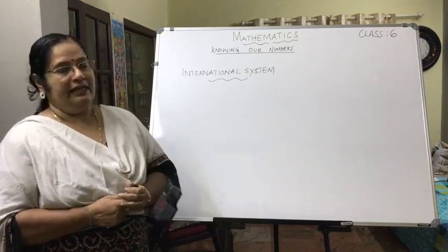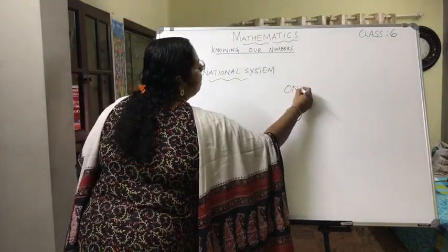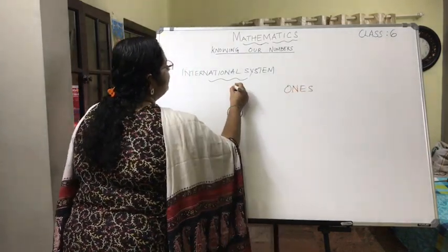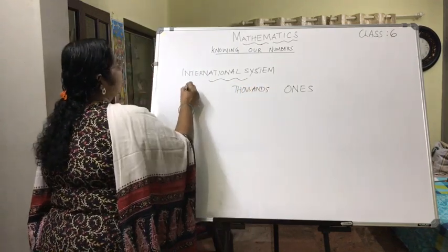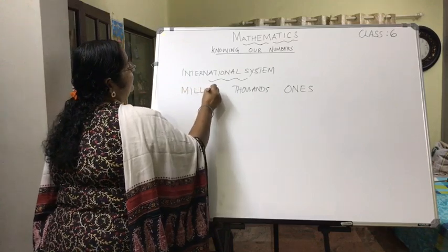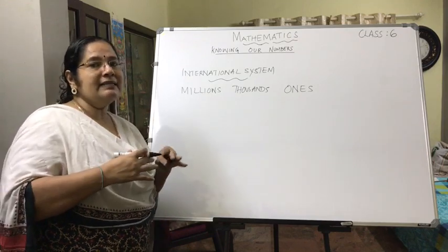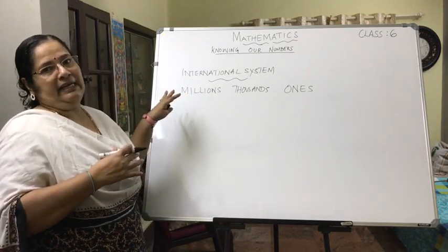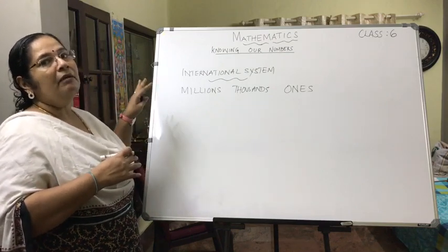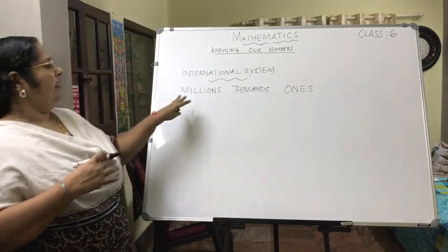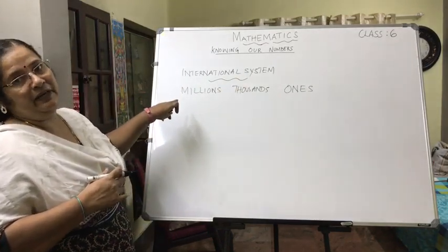Now let us see which are the periods. The three periods are: the ones period, the thousands period, and the millions period. It doesn't mean it stops at millions — there are periods beyond this — but we are restricting ourselves up to the millions period. So we have the ones period, the thousands period, and the millions period.